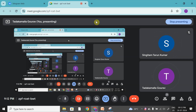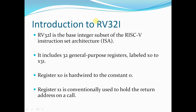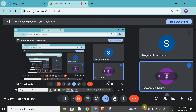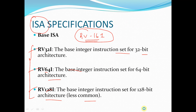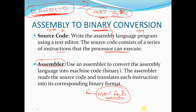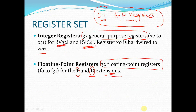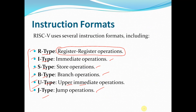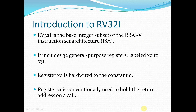In our previous sessions we started with a discussion of RISC-V overview, assembly to binary conversion, a brief overview of the standard extensions, register sets, and instruction formats. These we have already discussed. So in today's session we will start with the introduction of RV32I instruction set architecture.